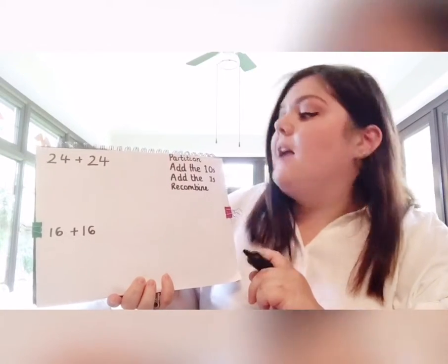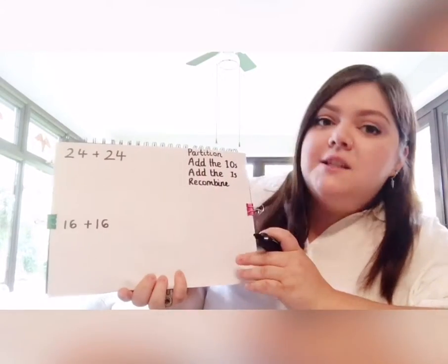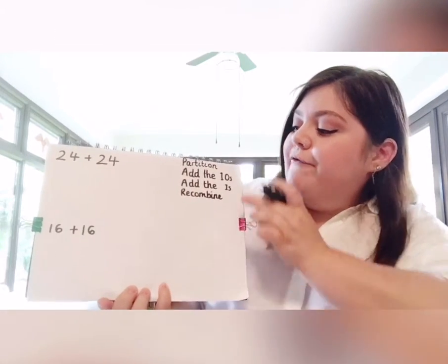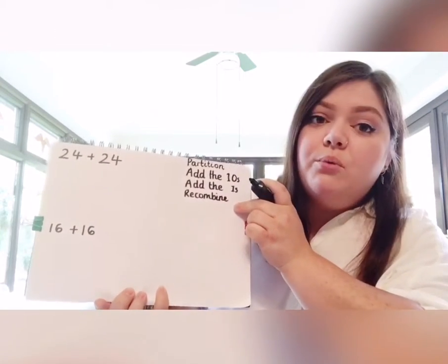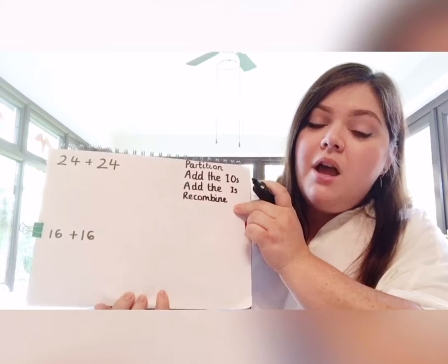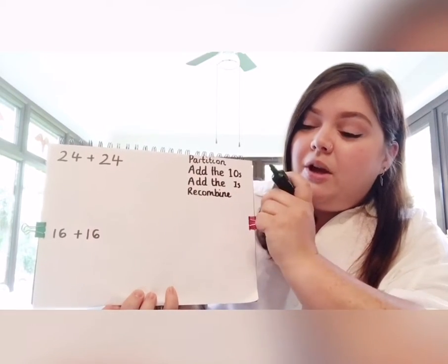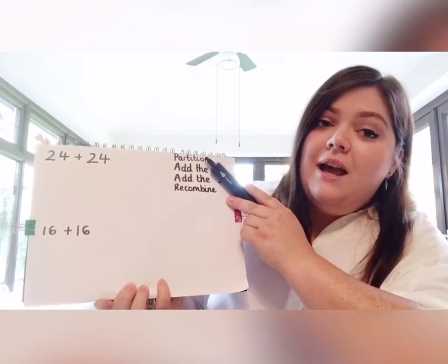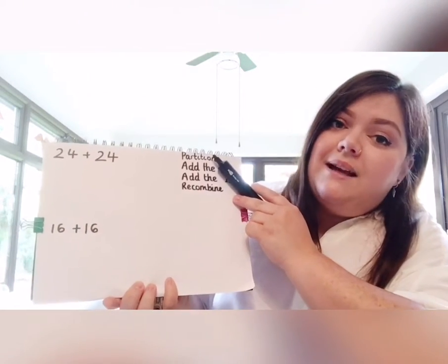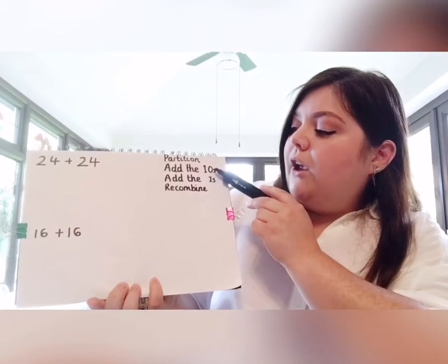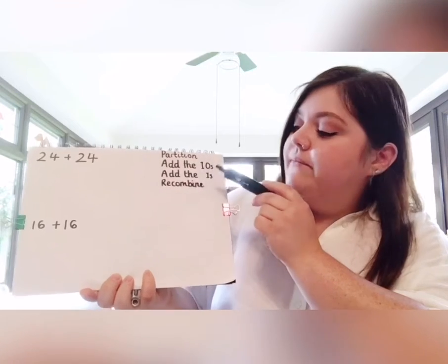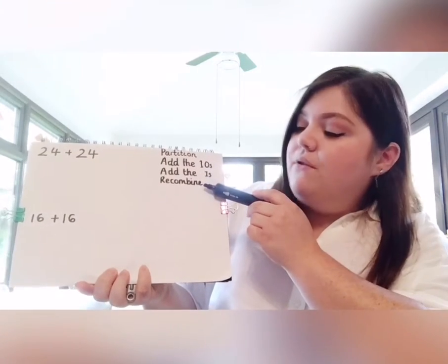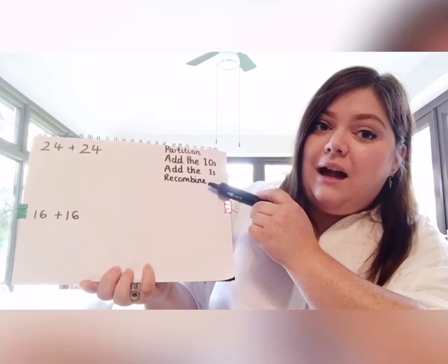Good morning 2C. Today we are going to be doubling our two-digit numbers. I've written down the steps in the top corner here to show you what I'm going to be doing. So first of all we're going to partition our tens and our ones digits. We're then going to add the tens, then add the ones, and then recombine at the end to give our total.